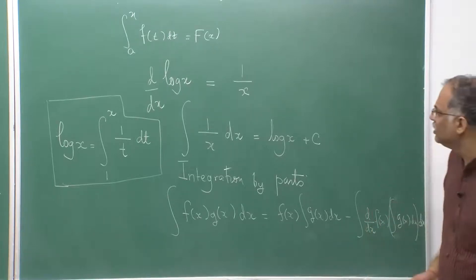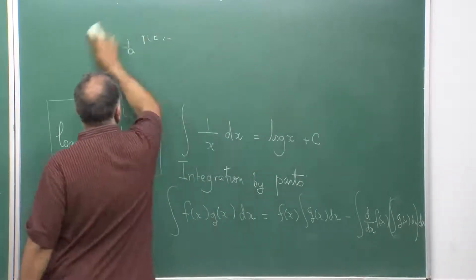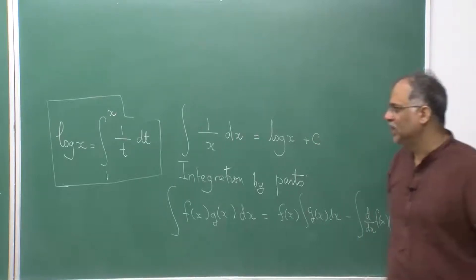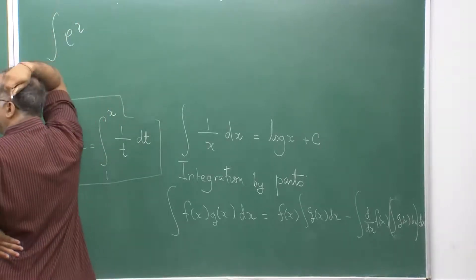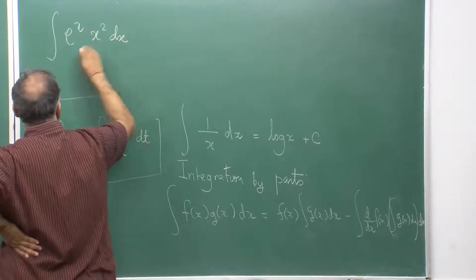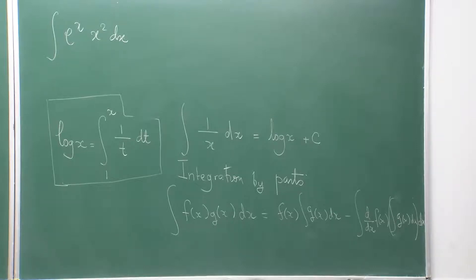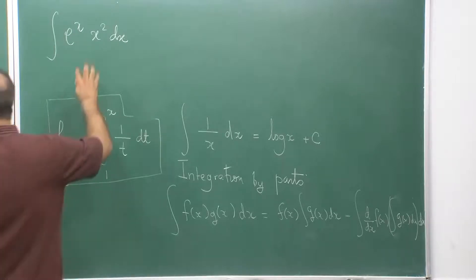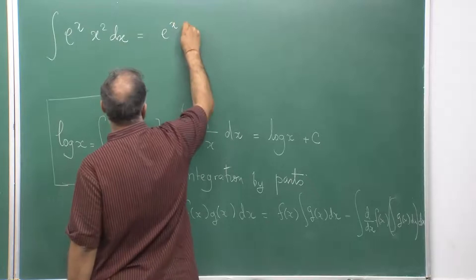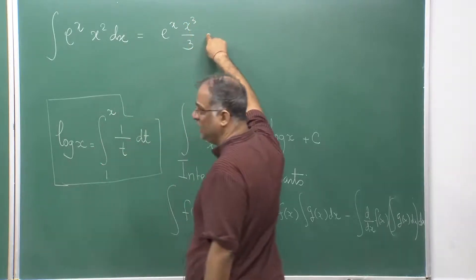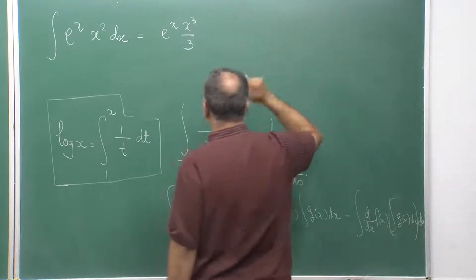For example, consider the integral of e^x · x² dx — something I remember from my undergrad days learned in high school. It is not easy to immediately apply substitution: if you put t = x², you get dt = 2x dx, but you end up in the same situation. Substitution will just not work here so easily. You really have to think about integration by parts.